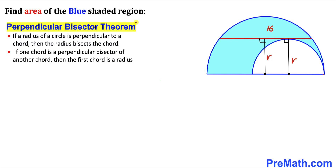Now let's recall the perpendicular bisector theorem. If a radius of a circle is perpendicular to a chord, then the radius bisects the chord. In our case, this line is part of the radius of the larger semicircle and is perpendicular to this chord, so it bisects the chord into two equal parts. If the whole length is 16 units, then each half is 8 units.